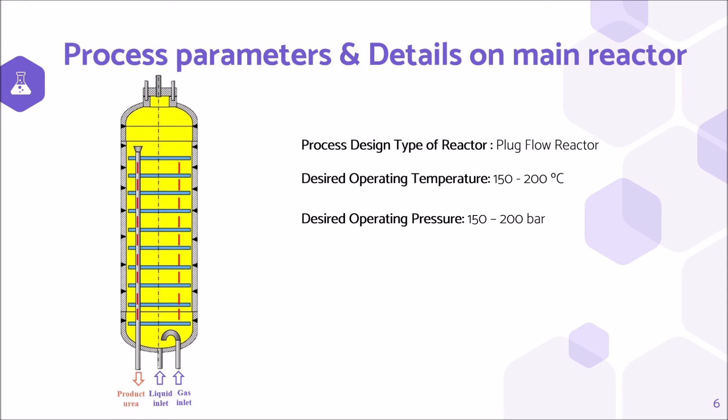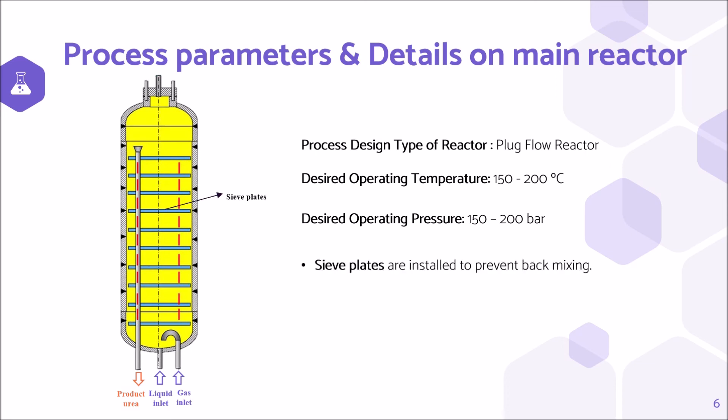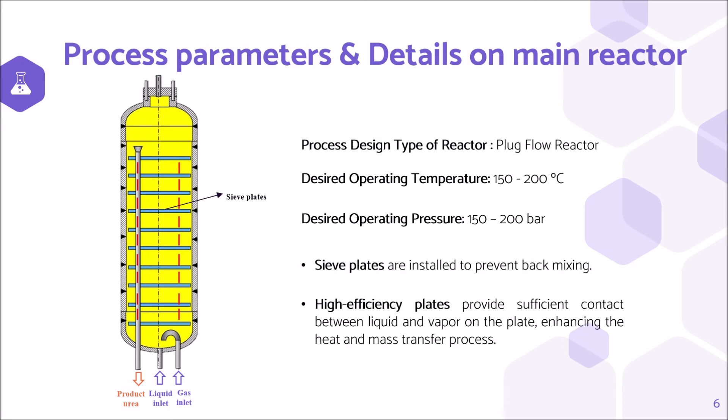The optimum conditions to operate the urea reactor are around 150 to 200 degrees Celsius and 150 to 200 bar pressure. This reactor approaches the behavior of a tubular plug flow reactor, in which sieve plates are installed to prevent back mixing. High efficiency plates ensure sufficient contact between liquid and vapor on the plate, which enhances the heat and mass transfer process.